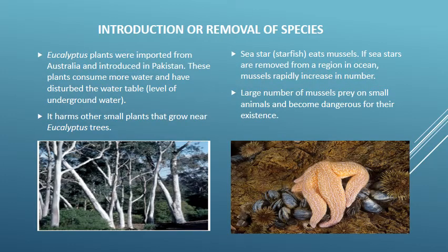Here are examples showing how the introduction or removal of species can threaten the life of other organisms. Eucalyptus plants were imported from Australia and introduced in Pakistan. These plants consume more water and have disturbed the underground water table in that area, harming other small plants that grow near eucalyptus trees. Another example is the sea star: sea stars eat mussels, which are small shelled organisms. If sea stars are removed from a region, mussels rapidly increase in number, prey on small animals, and become dangerous for their existence.